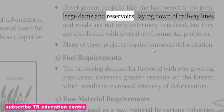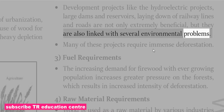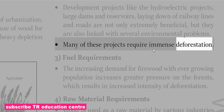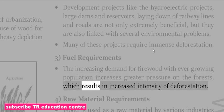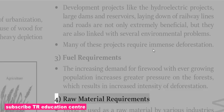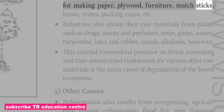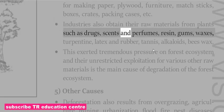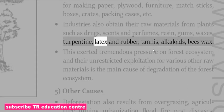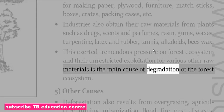Development projects like hydroelectric projects, large dams and reservoirs, and laying down of railway lines and roads are extremely beneficial but also linked with several environmental problems, and many require immense deforestation. The increasing demand for firewood with ever-growing population increases pressure on forests. Wood is used as a raw material by various industries for making paper, plywood, furniture, matchsticks, boxes, crates and packing cases. Industries also obtain raw materials from plants such as drugs, scents, perfumes, resin, gums, waxes, turpentine, latex and rubber. This has exerted tremendous pressure on forest ecosystems.